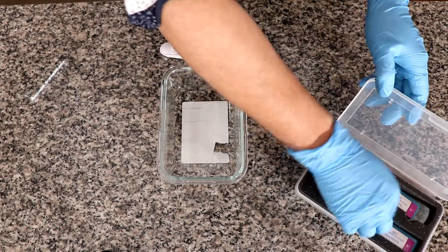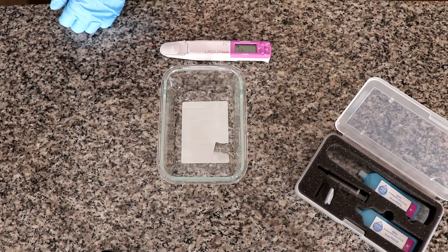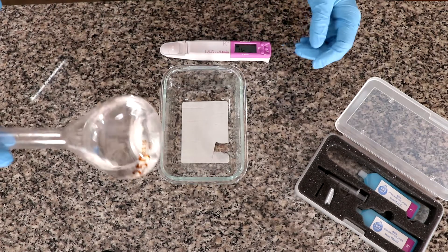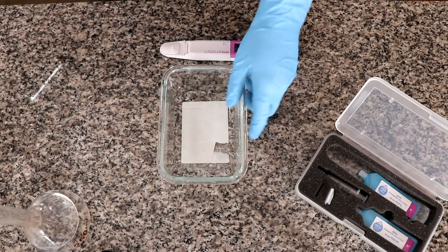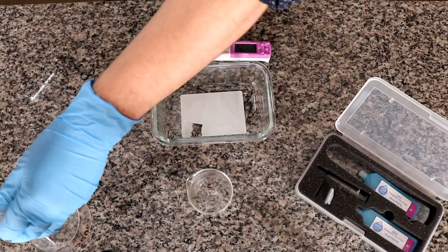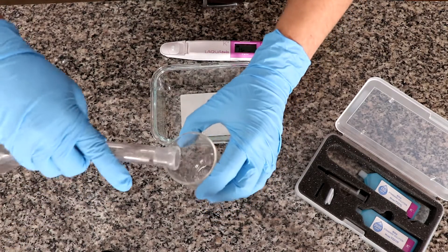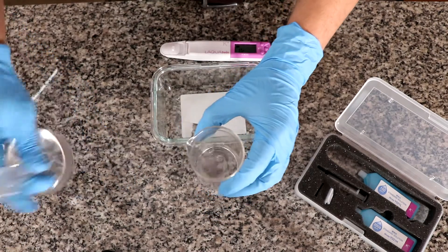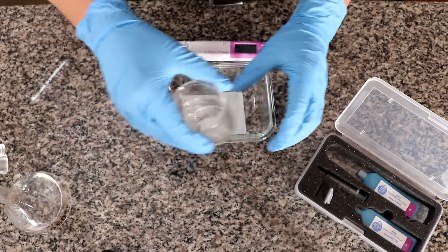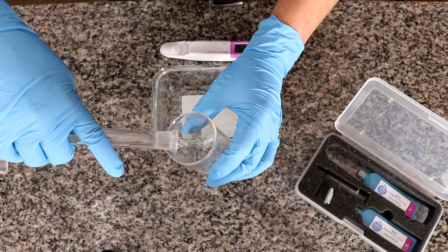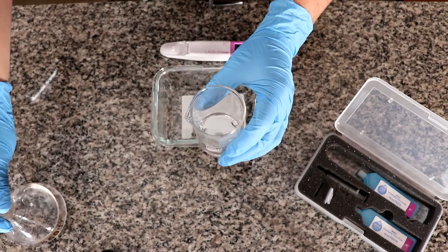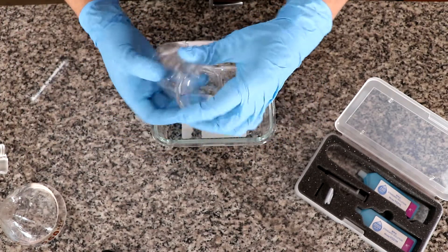Now we're going to put this calibration solution away and we're going to measure a problem solution. So we have here a solution that I prepared from a hydroponic fertilizer. Now I'm going to measure its potassium concentration. In theory it should be around 85 ppm according to the manufacturer.